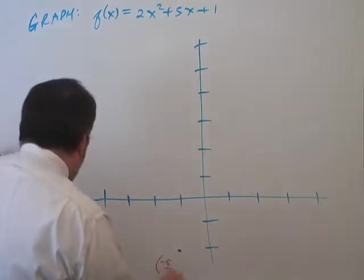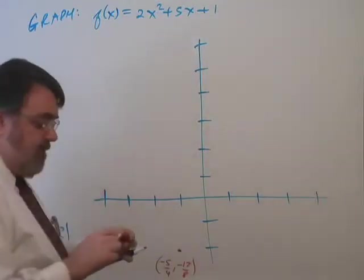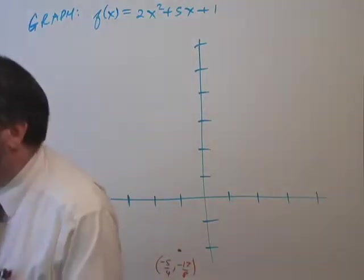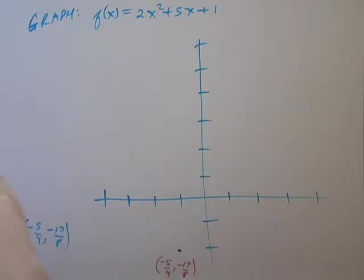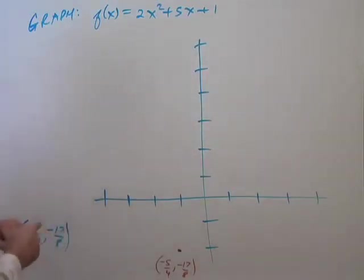Negative 5 fourths, comma, negative 17 eighths. Look at my monitor and there's a button in the way of that. Okay, so there's the bottom of my graph, the least value.